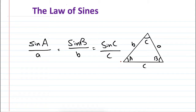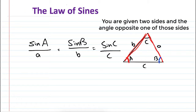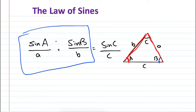For example, if you are given angle A and side a, and also side b, and you want to find angle B, you use sin(A)/a = sin(B)/b. You have the length of b, the length of a, and angle A — so you can solve for angle B. It's that easy.